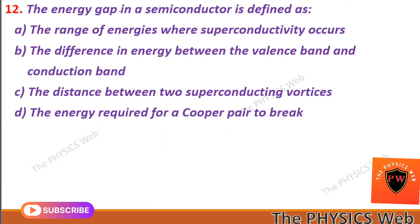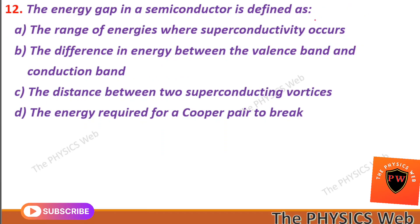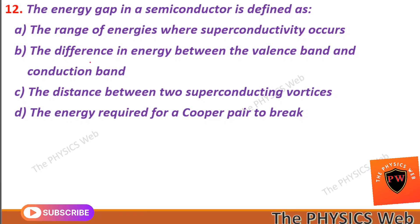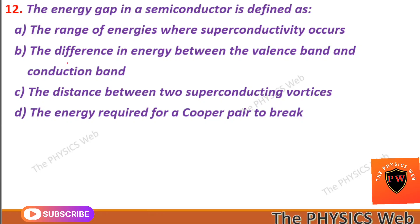Next, question twelve: the energy gap in a semiconductor is defined as the difference in energy between the valence band and the conduction band. So B is your correct option.